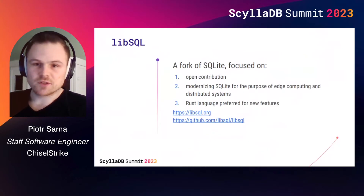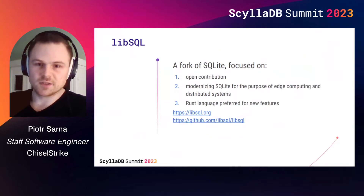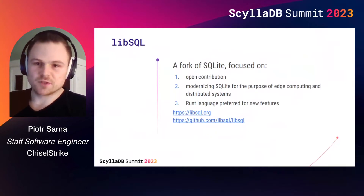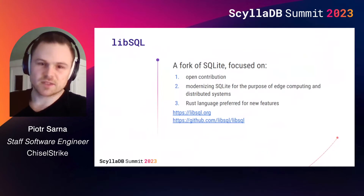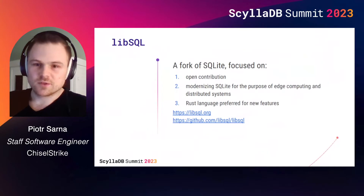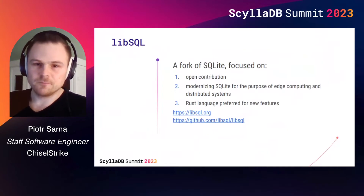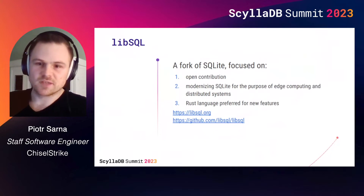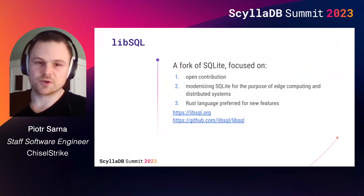In particular, we're interested in using SQLite in cases it wasn't originally designed for. There's an official web page called 'Appropriate Uses for SQLite' and it makes sense on its own, but we still want to go beyond it — that includes using it in a distributed environment, particularly edge computing. We also push Rust into the codebase, as it is not only a safer language but also one that makes contributions more likely due to Rust's ever-rising popularity.